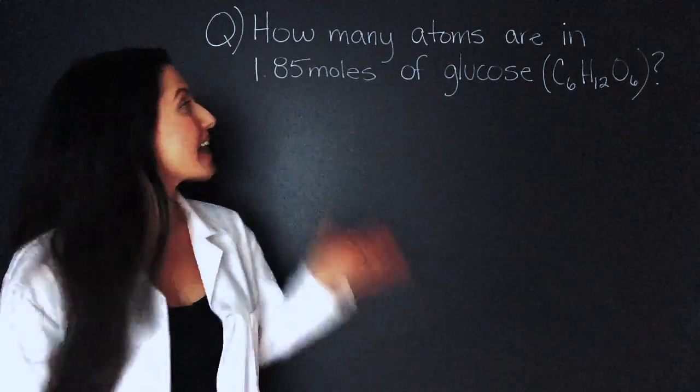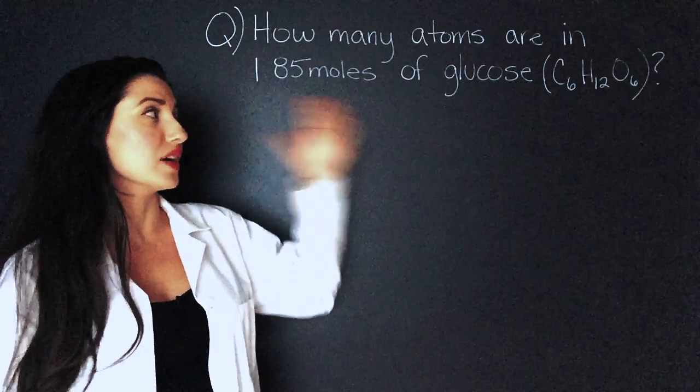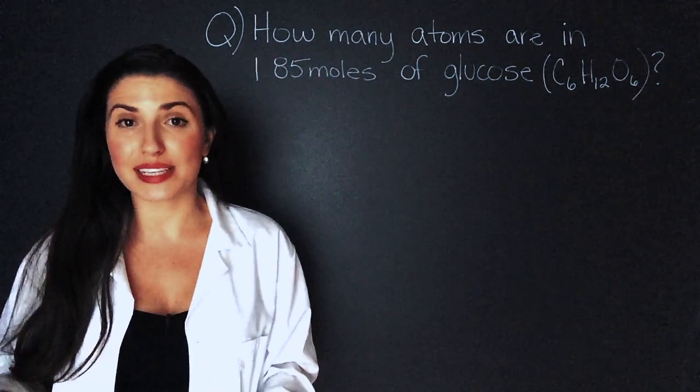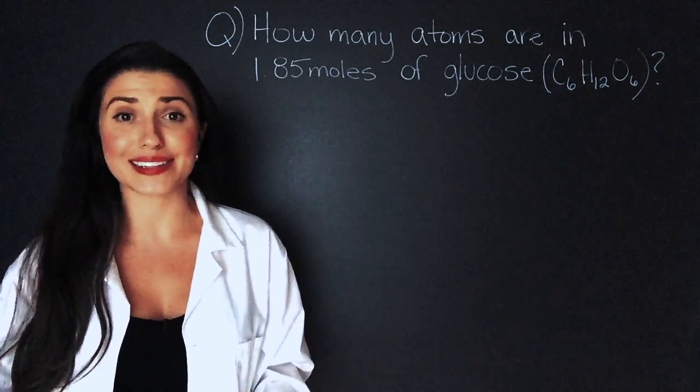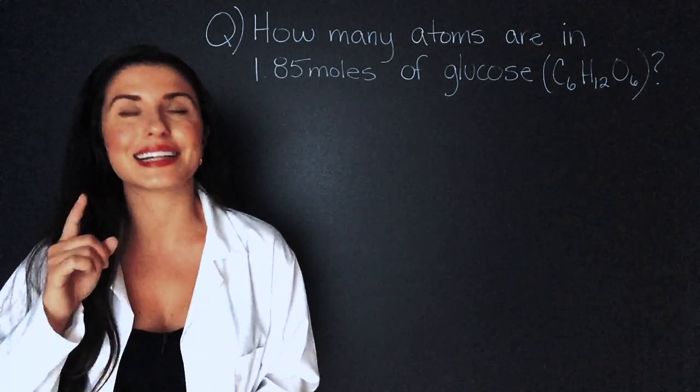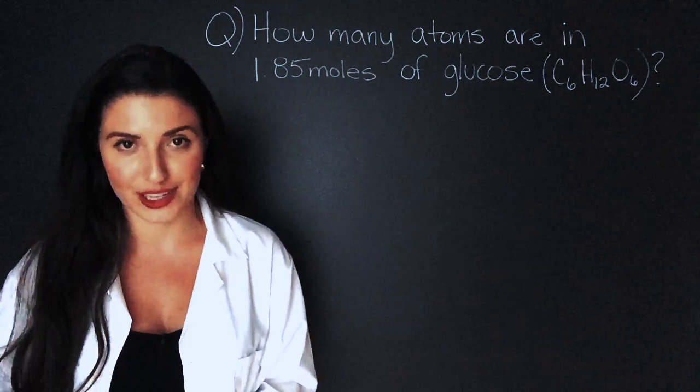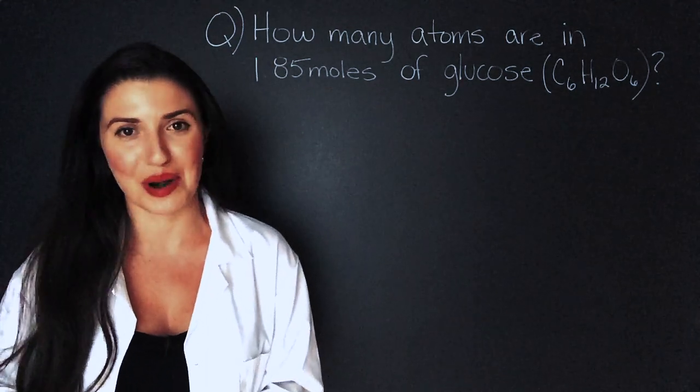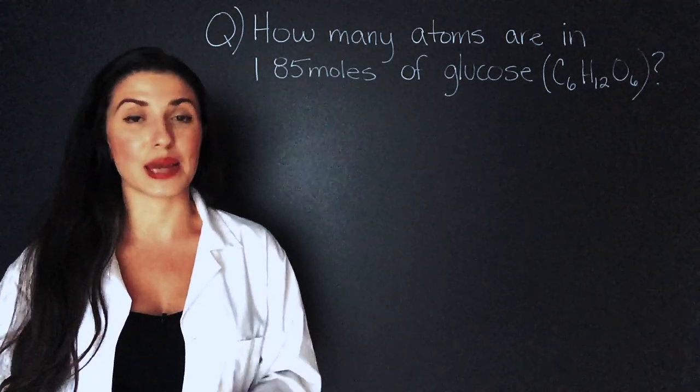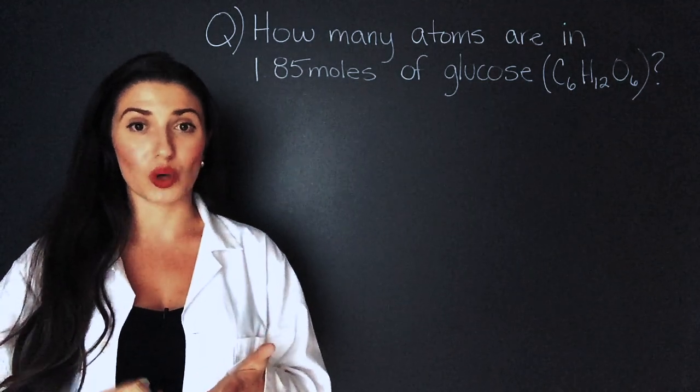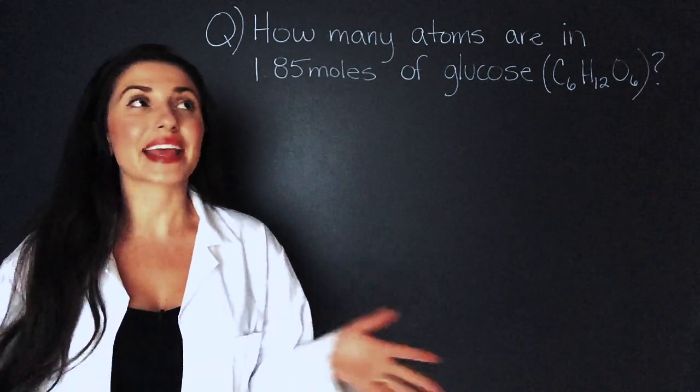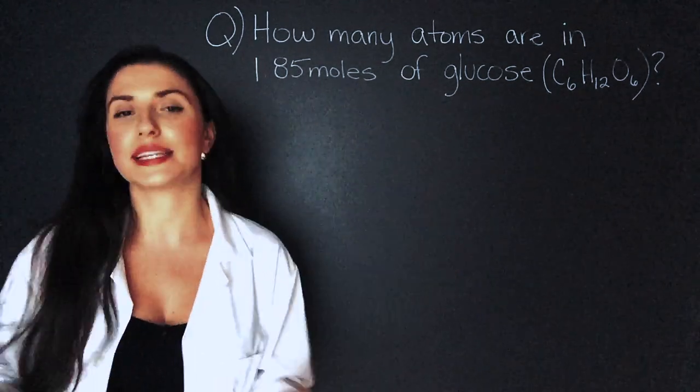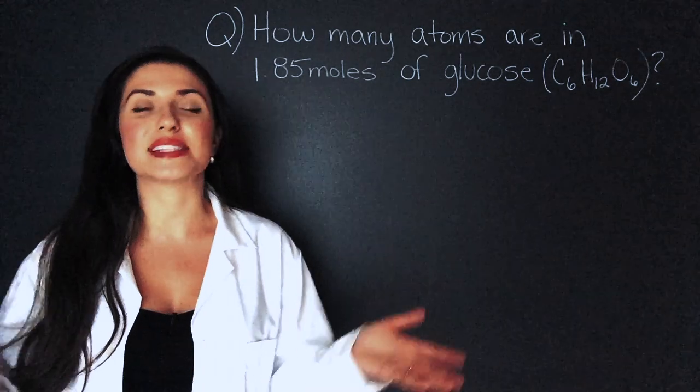Our next question is how many atoms are in 1.85 moles of glucose C6H12O6? Now this question seems really simple and it kind of seems like the questions we already answered but it's not and it's a classic university trick that will get you especially if in university you have multiple choice questions where you can't get part marks. Remember that equation we use number of molecules is equal to moles times Avogadro's number. That can be used to find atoms only if the sample only contains atoms.